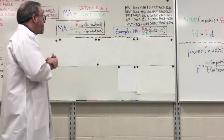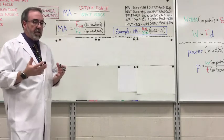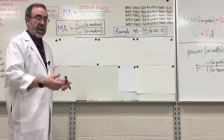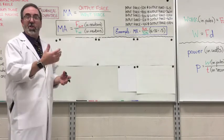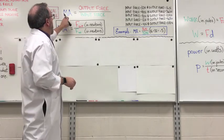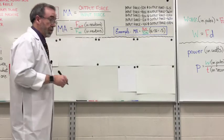The mechanical advantage tells you how many times larger or smaller the output force is than the input force. And this will show you how efficient the machine is, which we're going to get into later. Let's look at it. This is one of those equations that's counterintuitive.